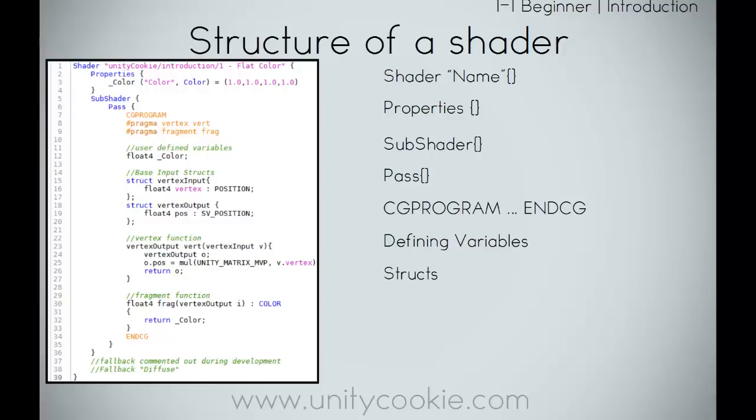Next we have defining variables. For the CG to read our variables set in the properties, they need to be defined. We can't just say 'grab color' — we need to tell Unity it's a float color, or a half, or a fixed, or whatever we need. Defining variables tells the CG what it's dealing with. Next we have structs. Structs are like classes — they are a construct that contains a set of predefined variables, and we can write to and read from these structs within our different functions. In Unity we use structs to communicate between Unity and our vertex function, and between our vertex function and our fragment function.